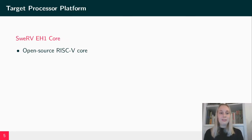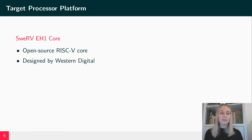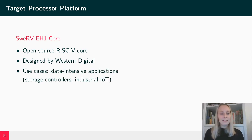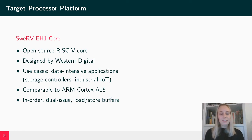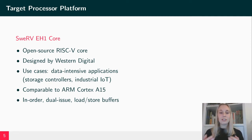We consider the Swerve core as the target processor platform for our analysis. The Swerve core is an open-source RISC-V core designed by Western Digital, applied in data-intensive fields such as storage controllers. It is comparable to an ARM Cortex-A15. The core is an in-order core and features a dual-issue pipeline, meaning it can execute not just one but two instructions per clock cycle, and it has some load-store buffers, some of which can be compared to a small data cache.